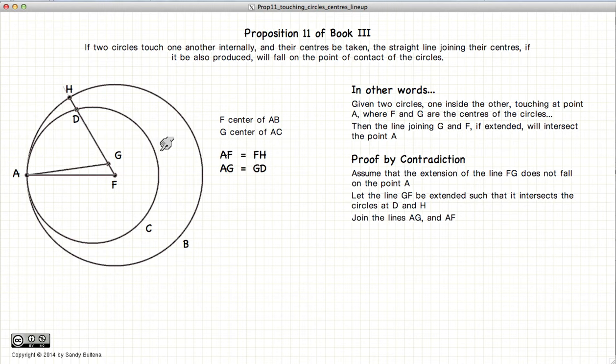Now because we're dealing with the centers of the circles, AG is equal to GD because G is the center of this inner circle. And AF is equal to FH because F is the center of this outer circle. So we have the radii of our circles being extended outwards here.